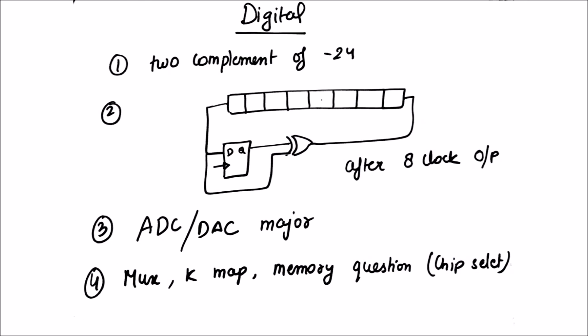First we'll discuss the digital part, in which one question was asked about the 2's complement of minus 24. Next question, a figure was given. Tell that after 8 clock pulses what will be the output, and a left shift register was given. ADC and DAC plays the major part of digital. Around 5 questions were asked from ADC and DAC. One question each from MUX, KMAP and chip select memory question.